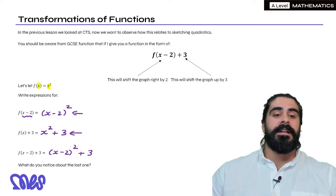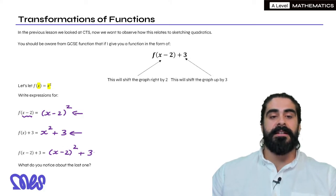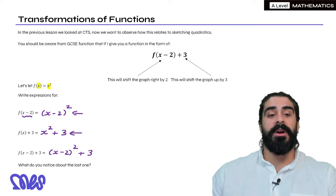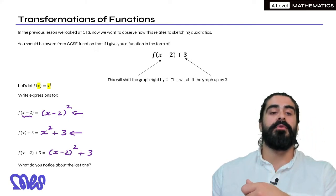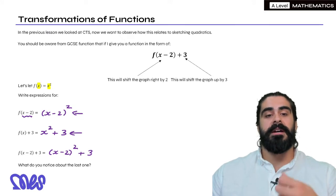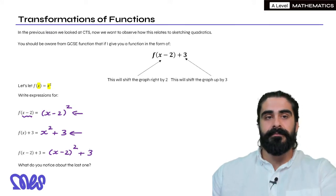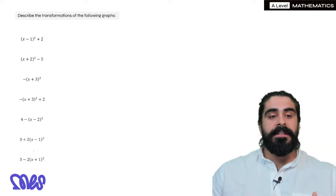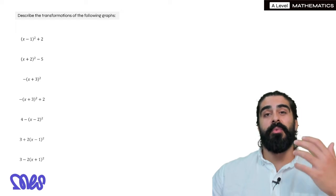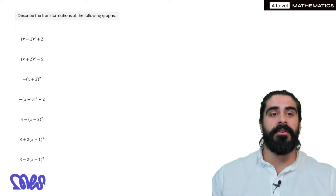So actually if we do have a quadratic in its completed square form we can just observe its transformations of the original x² graph. So the (x-2)² - all I'm thinking about is I'm taking the original x² graph and I'm moving it to the right by 2 then I'm moving it up by 3. So all we want to do is observe different forms of completed squares and then know what transformations of the x² graph we have to make.